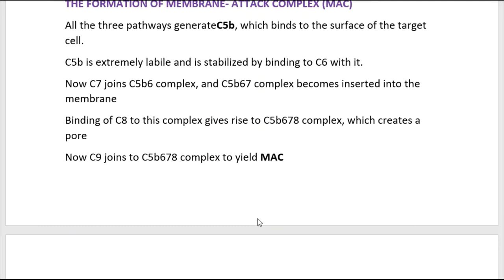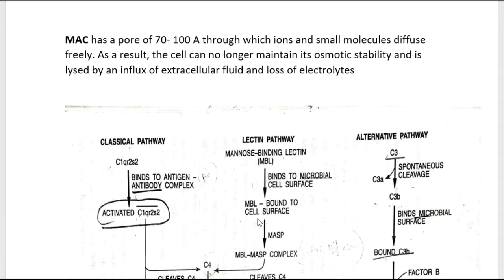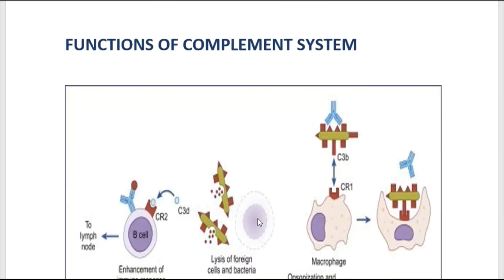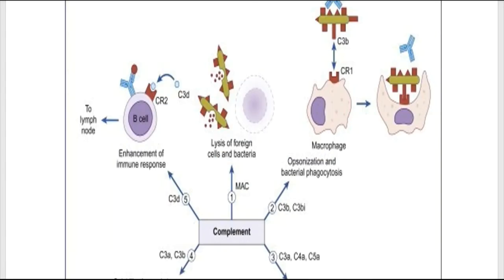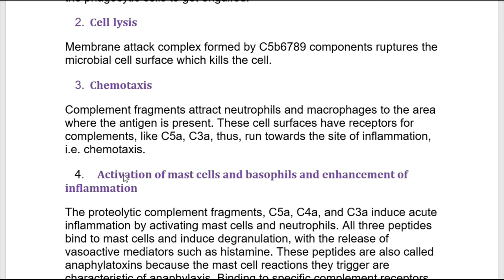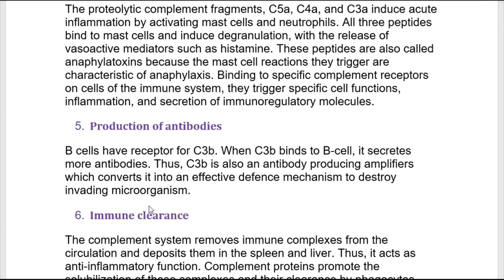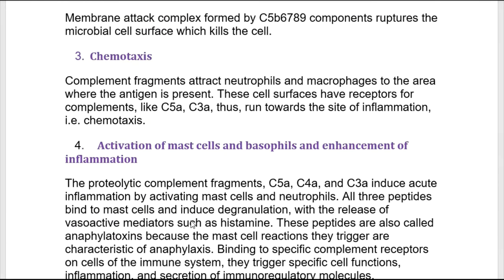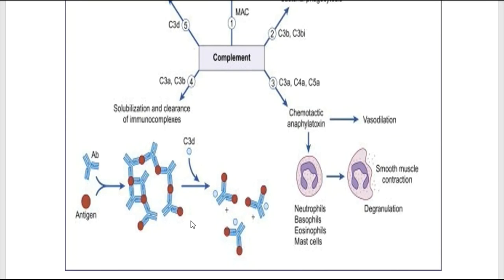Moving to the functions of the complement system: there are several functions, direct and indirect. The six major types are: opsonization and phagocytosis, cell lysis, chemotaxis, activation of mast cells and basophils and enhancement of inflammation, production of antibodies, and immune clearance.